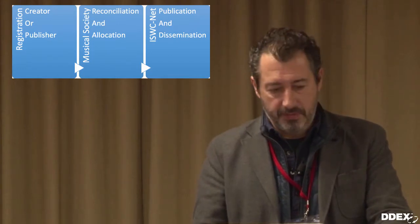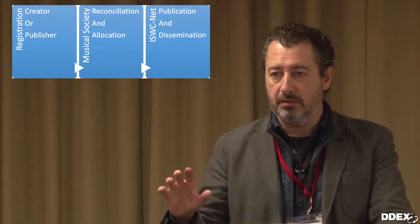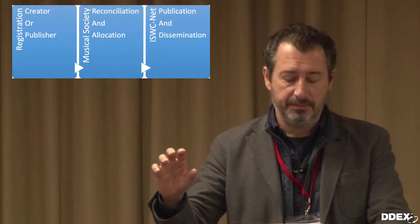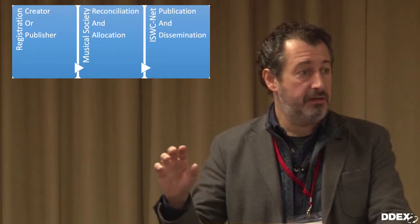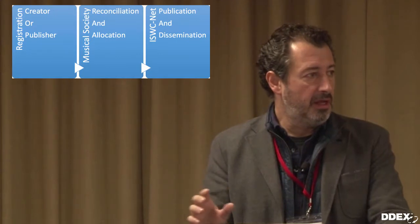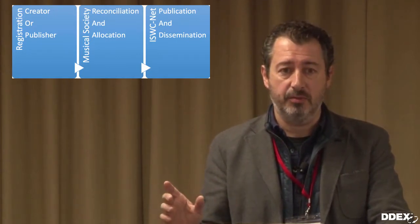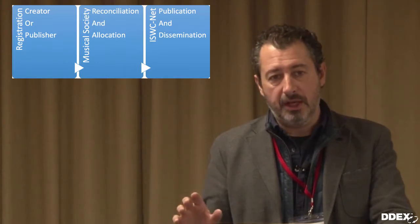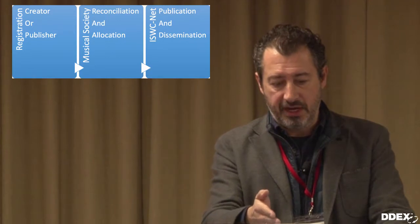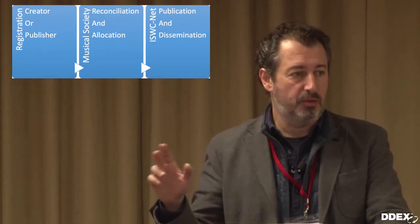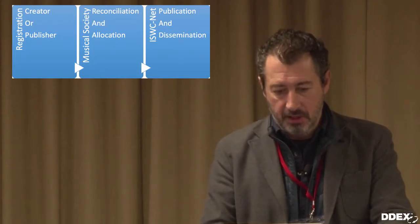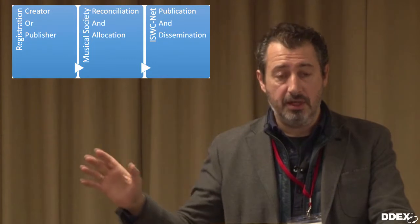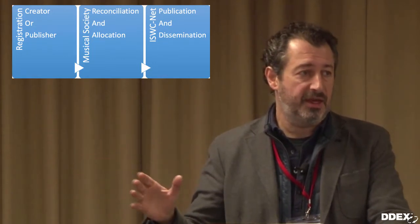Registration happens when an individual writer registers a work with the CMO or registration agency, or when a publisher sends information to the registration agency by electronic means — like the CWR files. The registration agency will assign an ISWC depending on the rules I explained, and possible reconciliation with other registers from different sources. When assigned, the information is uploaded to ISWC net and is ready for dissemination — published and then disseminated.